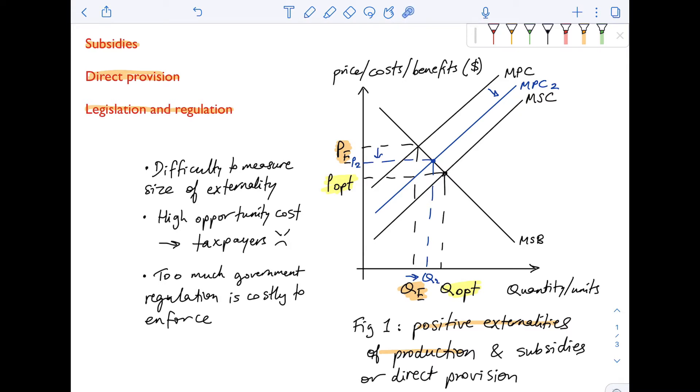Some textbooks will actually shift the new MPC curve all the way to the MSC. So basically what happens is that the MPC shifts all the way and it reaches the MSC. But I prefer to just put it halfway so that you can actually see that Q2 is moving a little bit closer. It's closer to Qopt.